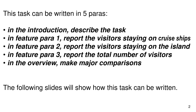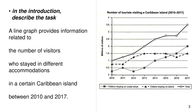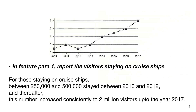Now in the introduction, describe the task. A line graph provides information related to the number of visitors who stayed in different accommodations in a certain Caribbean island between 2010 and 2017.